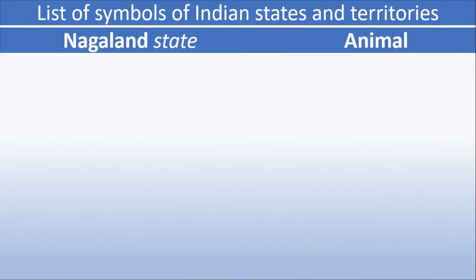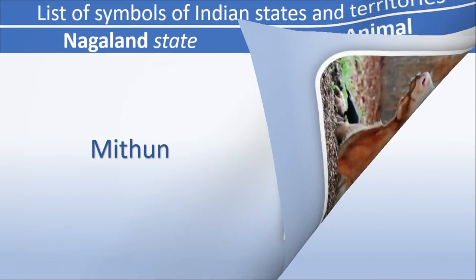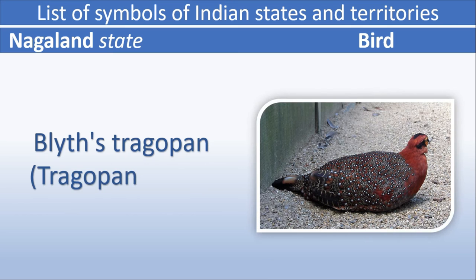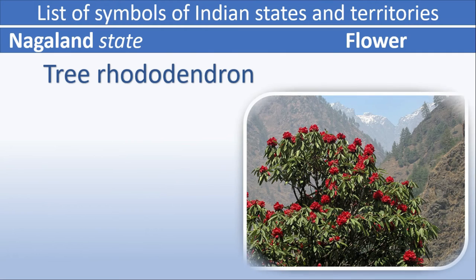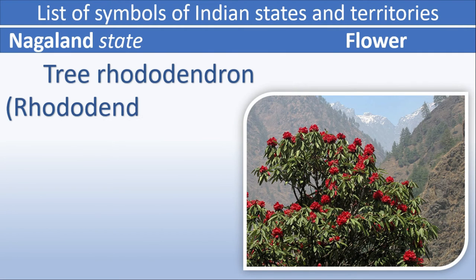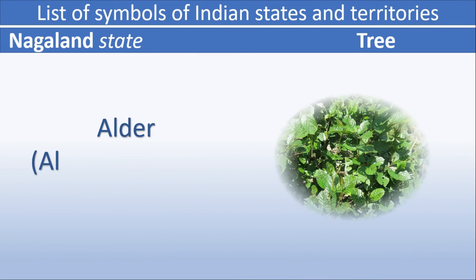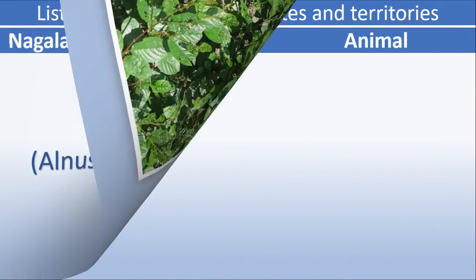Nagaland animal: Mithun. Nagaland state bird: Blyth's Tragopan. Nagaland flower: Rhododendron. Nagaland tree: Alder.